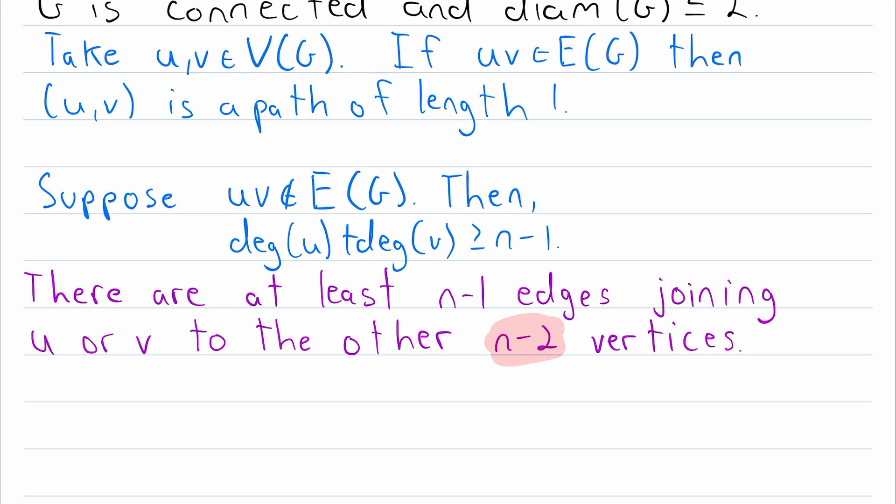Since n minus 2, the number of other vertices, is less than n minus 1, which is the minimum possible number of edges joining U or V to those vertices, there must be some vertex W such that W is adjacent to U and V.